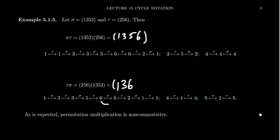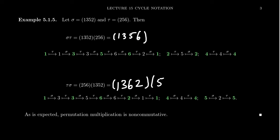3 is sent to 5 by sigma; 5 goes to 6 by tau, so 3 goes to 6. 6 is left fixed by sigma; tau sends 6 to 2, so the composite gives 2. Sigma sends 2 to 1 and tau does nothing to 1, so we close the cycle. 4 is fixed by both — a one-cycle we erase. 5 also maps to itself. So tau sigma is likewise a four-cycle.